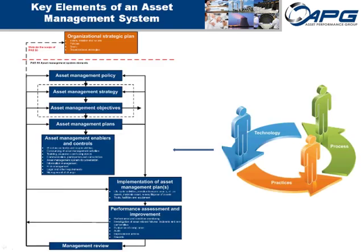PAS 55 also understands the need for enablers and controls. Below the plan, proper practices like Six Sigma, LEAN, RCM, and FMEA need to be considered, as well as a structured risk identification model to enable your organization to focus effort on those components and functions that contribute the most. Processes are needed that outline the roles and responsibilities of the people involved in the asset management function, as well as the technology used to support the effort. These processes need to be supported with employee skills assessments and training plans.